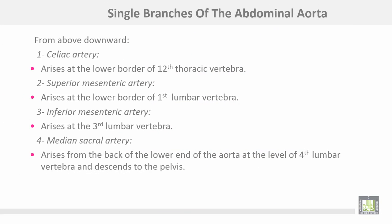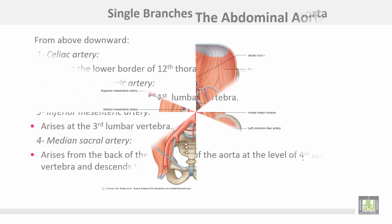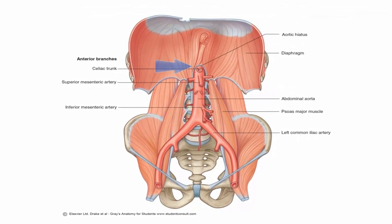From above downwards, the abdominal aorta gives single midline branches. Number one: the celiac artery, arising at the lower border of the twelfth thoracic vertebra just after entering the abdomen. Number two: the superior mesenteric artery, arising at the lower border of the first lumbar vertebra. Number three: the inferior mesenteric artery, arising at the third lumbar vertebra. Lastly, the median sacral artery arises from the back of the lower end of the abdominal aorta at the level of the fourth lumbar vertebra and descends into the pelvis.